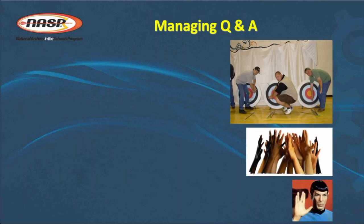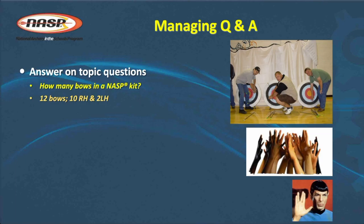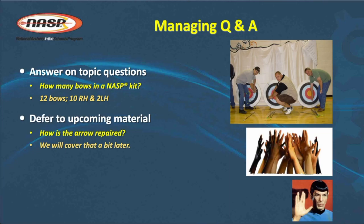Managing questions and answers — Q&A can get time consuming, so you want to manage those carefully since they're not really built into the agenda. If someone asks a question that's on topic and quick to answer, like how many target butts come in a kit — five — go ahead and answer it. If they ask something you're going to cover later, tell them you'll cover that in a little while. And if they ask questions unrelated to the training — like what brand of bow you personally shoot — defer that to a break or after class, because it could be time consuming or a hot button for someone with a different preference.